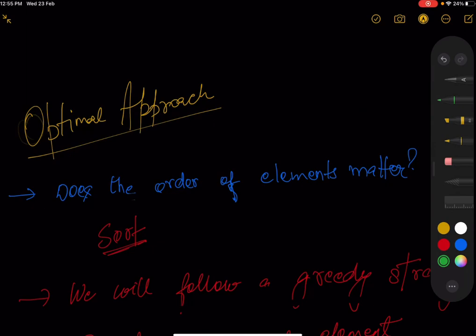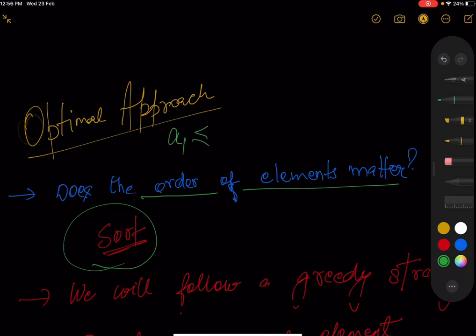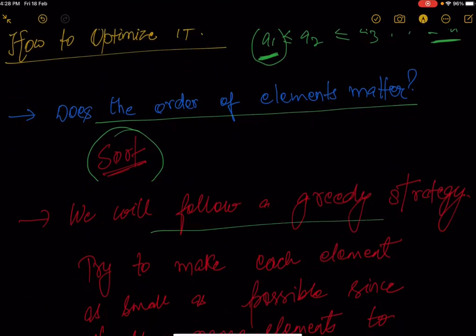Now let's look at an optimal approach. We need to maximize the count of unique elements. Since the order of elements doesn't matter, it is very often useful to sort the data, as sorting reveals interesting properties. We sort our array and follow a greedy strategy: try to make each element as small as possible, since that allows more elements to its right to become unique.